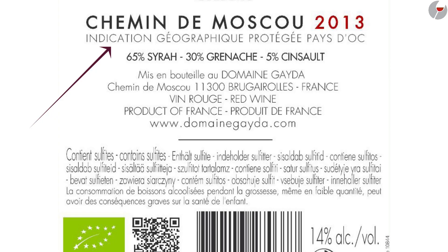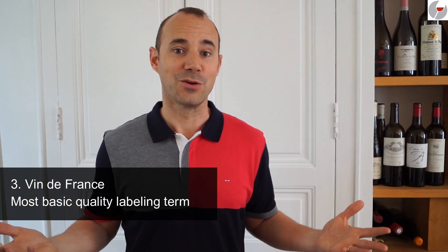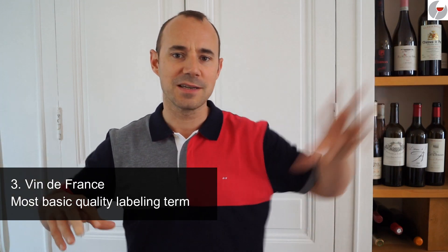The IGP covers a much wider and larger area — it's more like a regional appellation with fewer restrictions. On this label from the Languedoc it says 'Indication Géographique Protégée Pays d'Oc.' Pays d'Oc is an IGP regional appellation from the south of France, and there are many others in different areas of France. After the IGP, the last level is the Vin de France — meaning wine coming from France — where grapes can come from different places and be blended, so the winemaker has more freedom.